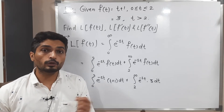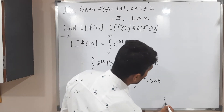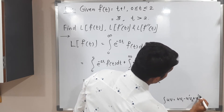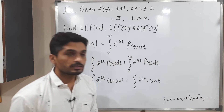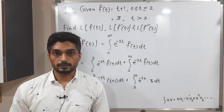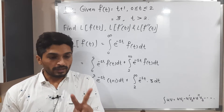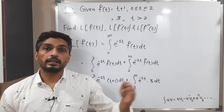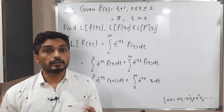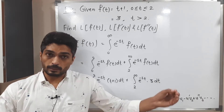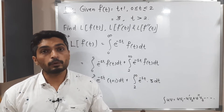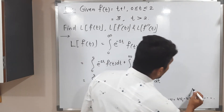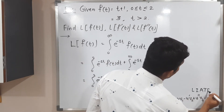For the first integral there is a product of two functions, so we use the formula: integration u v equals u times v1 minus u-dash times v2 plus u-double-dash times v3, and so on. We select our u and v, take successive derivatives of u and successive integrations of v with alternating minus-plus signs, stopping when the derivative of u becomes 0. The technique for selecting u and v is LIATE.